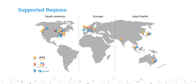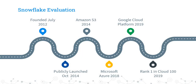Snowflake was founded in 2012 and published in 2014. In the same year, it came out on the Amazon AWS platform. Once it became more stable, it introduced Microsoft Azure Cloud in 2018, and in 2019, Google Cloud Platform was introduced. Within a short period of time, this product has evolved a lot, supporting three major cloud service providers — Amazon, Google, and Microsoft. Snowflake was ranked number one in the Cloud 100 in the year 2019 and is one of the leading tools in the cloud data warehouse market.